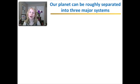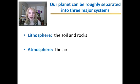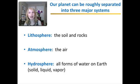Now we can take our entire planet Earth and divide it into three major systems or three divisions. The first is the lithosphere, which is all the soil and rocks that you walk on. We have the atmosphere, which is the air that we breathe, and the hydrosphere, which is any form of water found on the planet. It could be solid water, ice, liquid water, or water vapor.